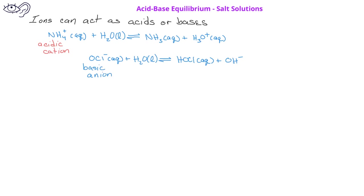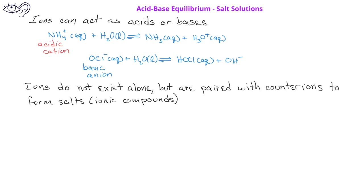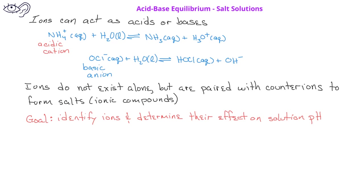It's important to remember that ions do not exist by themselves. Instead, they'll be paired with a counter ion to form a salt or an ionic compound. In this video, we will identify cations and anions in salt solutions and then determine if the solution will be acidic, basic, or neutral based on the ions present.